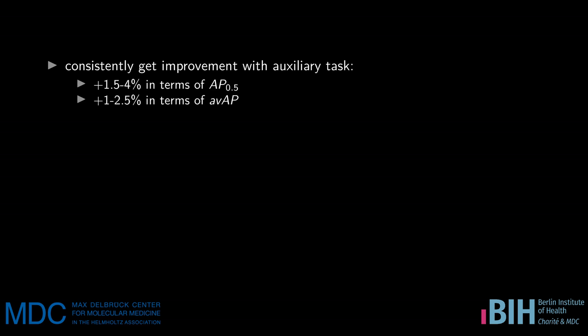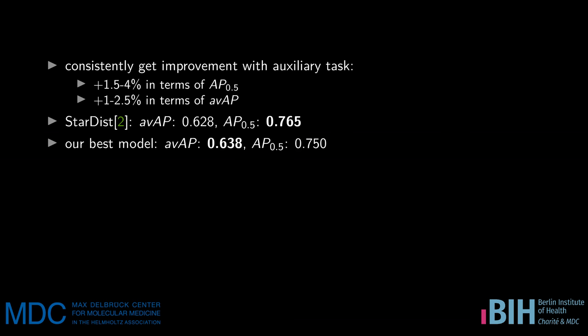We applied this method not only to the three-label model, but to multiple baseline models. In addition to the three-label model, we trained models learning a signed distance transform from the boundary, and models using direct neighbor affinities, a popular basis for methods for EM data. The results show consistent improvement across the board: a 1.5 to 4% increase in terms of AP at an IOU threshold of 0.5, and a 1 to 2.5% increase in terms of average AP over a range of IOU thresholds. Our best model shows similar performance compared to StarDist, the current state-of-the-art on this dataset — for average AP our model is slightly better, while for AP 0.5 StarDist is slightly better.